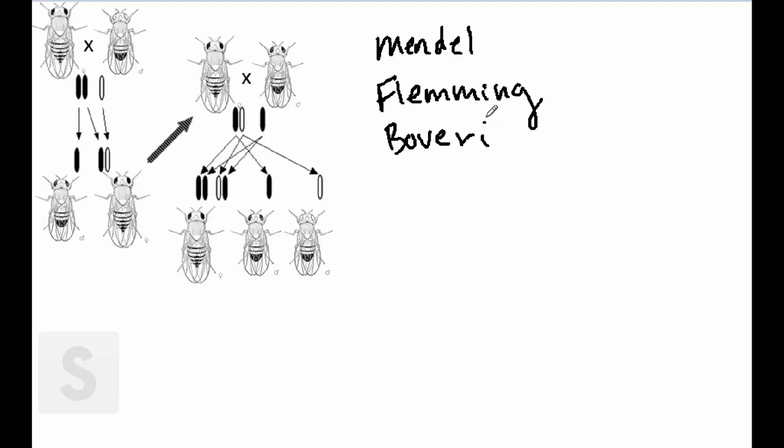And then Walter Sutton, who would find evidence to link chromosomes to Mendel's principles. And finally, it would be Thomas Hunt Morgan, who would actually put this concept to use when he tracked the white eye mutation in fruit flies.